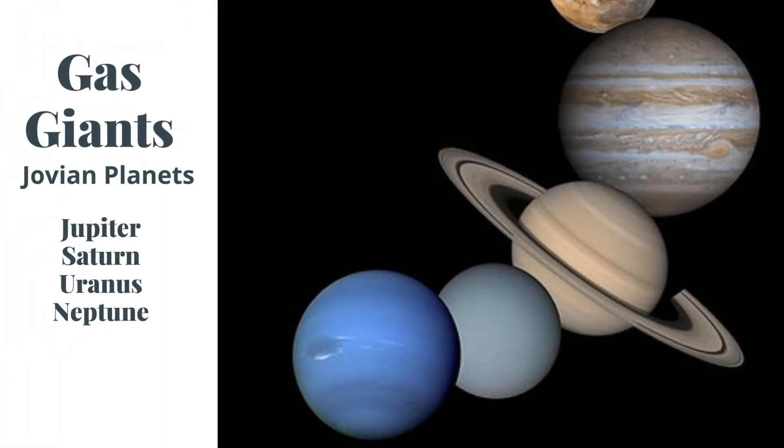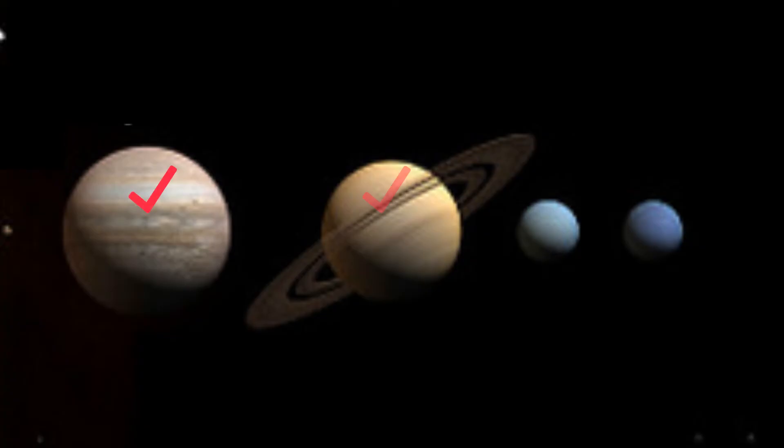The gas giants include Jupiter, Saturn, Uranus and Neptune. These planets are massive.